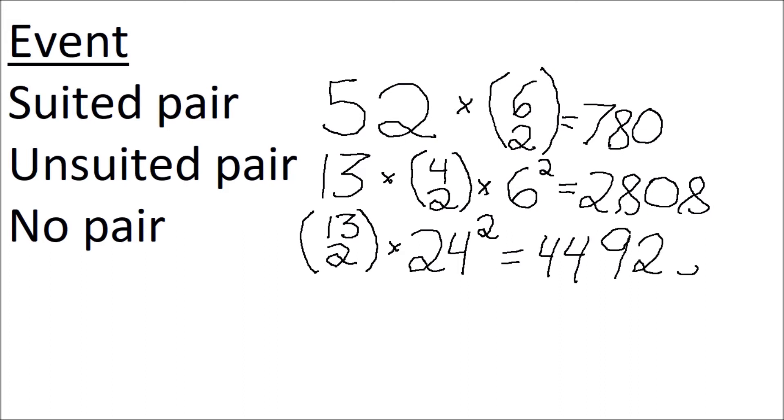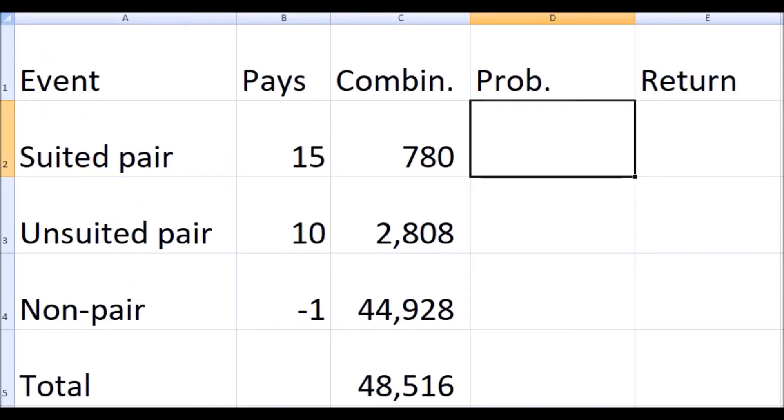So there are our combinations. Next, let's move all this over to Excel to see what kind of value we're getting with the pair square bet. Let's go on to the final part of this. I just showed you the number of combinations of each possible outcome in the pair square bet.